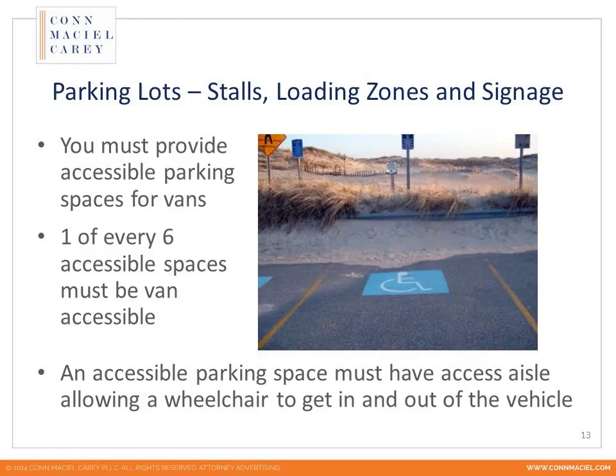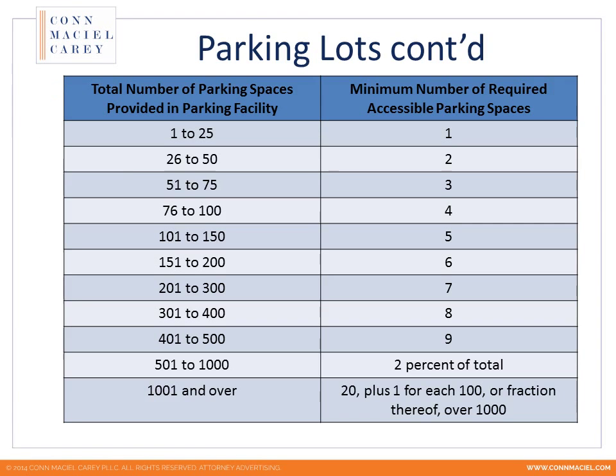Under the ADA, the allocation of accessible parking spots is as follows: for 1 to 25 total spaces, you need 1 accessible space; an additional space is required for up to 50 spots, with increments of 25. Once you reach 501 spots, it becomes a percentage. At 1,001 spots, you're looking at a set allocation of 20 accessible spots plus one for every 100 additional spots or fraction thereof.